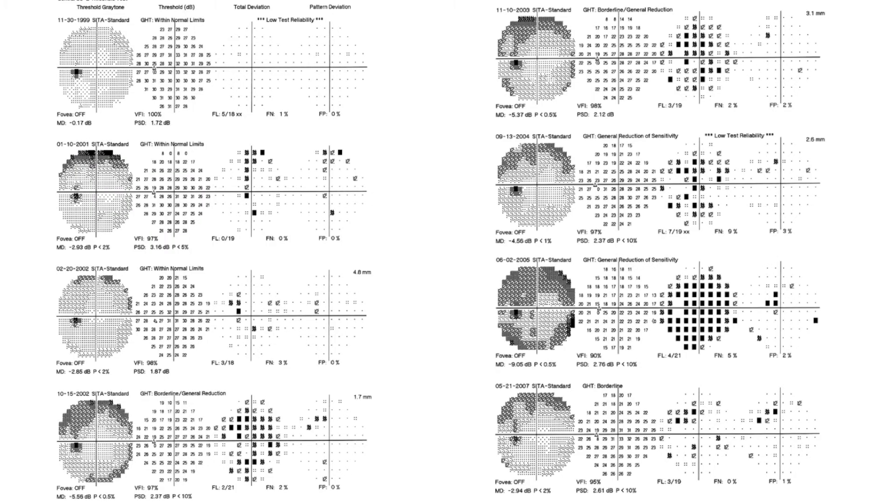This is a patient developing cataract over time. As you can see here, the total deviation is getting darker and darker. After removing the cataract, the total deviation has improved and is almost similar to the pattern deviation plot.